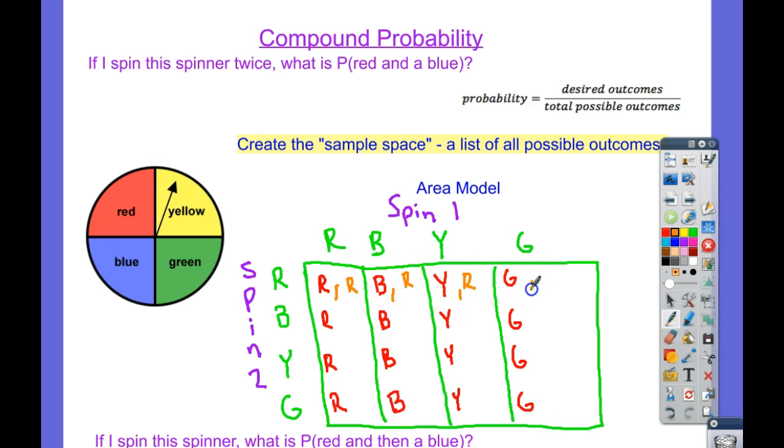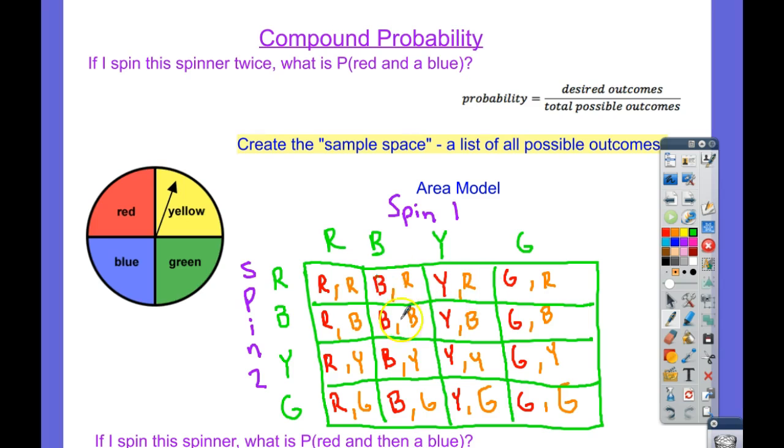And then I'm going to go over here for spin two and bring over all the possibilities for spin two. So red, red, red, red, blue, blue, blue, blue. So what you can see here is a list of all the possibilities. This is everything that could happen if I spin the spinner twice. So you could see each event with spin one listed first and spin two listed second. This is the possibility.